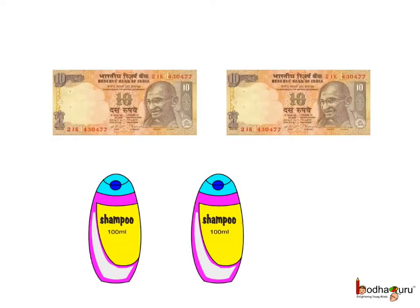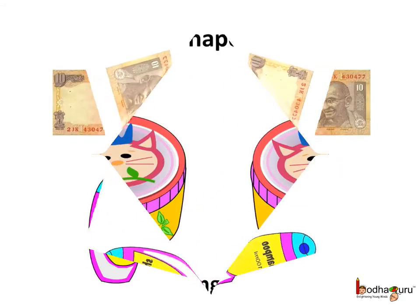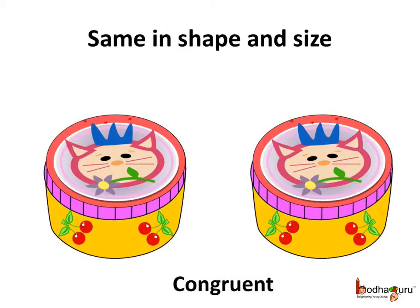So what is congruence? Take two 10 rupee notes and compare them — they are exactly the same in shape and in size. Even 200 ml shampoo bottles of the same brand look exactly the same in shape and size. Factories produce a single item in very large quantities, and every item is identical to each other. Like a factory produces tiffin boxes — the two tiffin boxes are exactly the same in shape and size. We say these items are congruent.